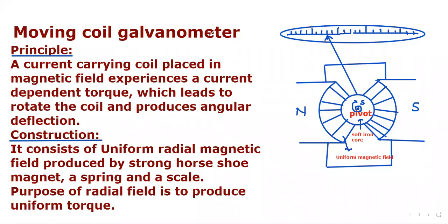Moving Coil Galvanometer. Principle: A current-carrying coil placed in a magnetic field experiences a current-dependent torque which leads to rotation of the coil and produces angular deflection. Construction: It consists of a uniform radial magnetic field produced by a strong horseshoe magnet, a spring, and a scale.